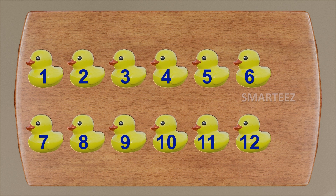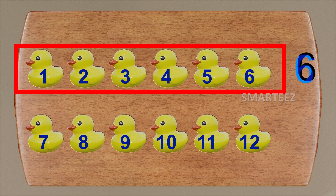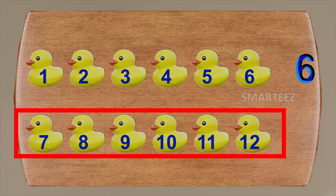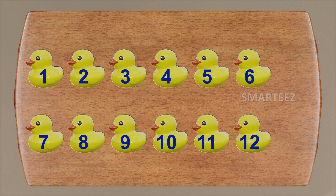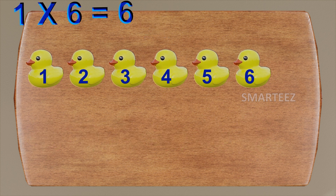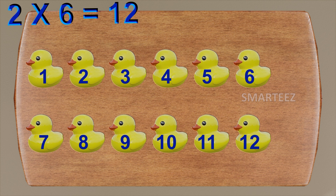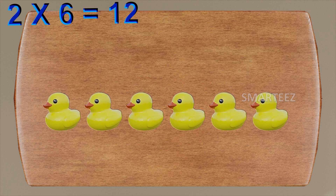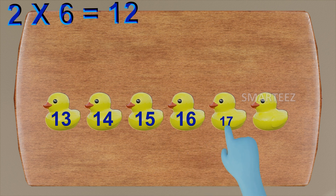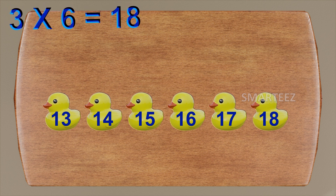I hope you got it. Let me explain it this way: we had one set of six rubber ducks earlier and we added to it another set of six rubber ducks. That's two sets of six rubber ducks, which is twelve. This is what we call multiplication and we use the symbol x. For the first set of six, we can write this as one times six is six. For the second set of six, we can write this as two times six is twelve. What if we add the third set of six rubber ducks? Then we will start counting after twelve: thirteen, fourteen, fifteen, sixteen, seventeen and eighteen. For the third set of six, we can write it as three times six is eighteen.